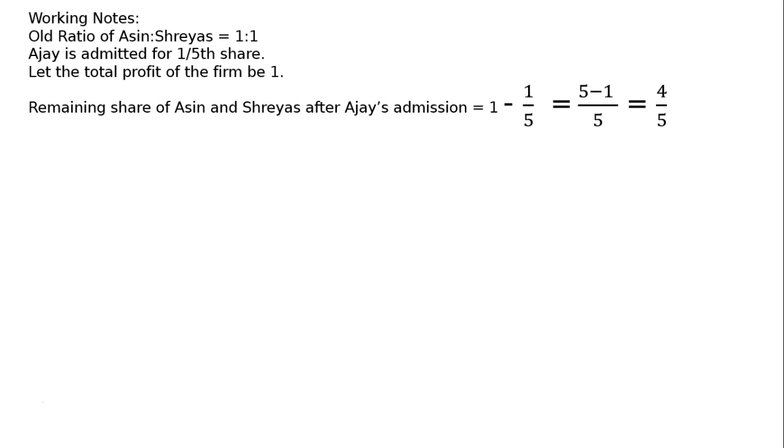Also show your workings. Working notes: The old ratio of Ashin to Shreyas is equal to 1:1. Ajay is admitted for one-fifth share. Let the total profit of the firm be 1. Remaining share of Ashin and Shreyas after Ajay's admission is equal to 1 minus 1/5, which by LCM of 5 gives 5 minus 1 upon 5, equal to 4/5.